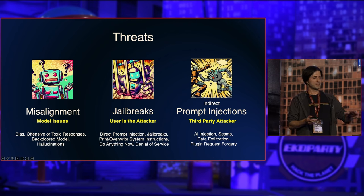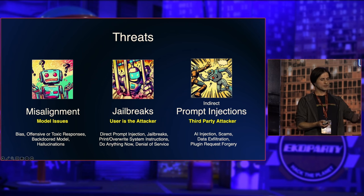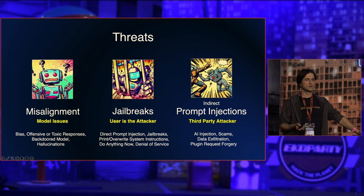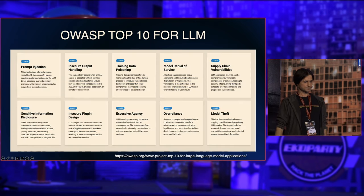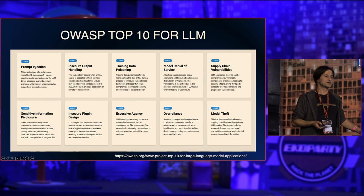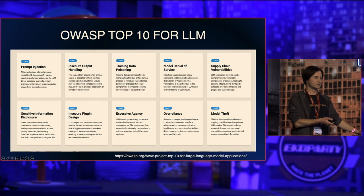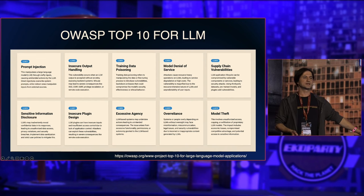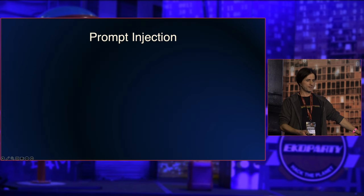Besides model issues, there are jailbreaks, where the user is the attacker — trying to make the model do something it's not intended to do. But what we'll really focus on in this talk is prompt injections, specifically indirect prompt injections, where a third-party attacker takes control of the conversation. They can perform scams, exfiltrate data, and call other tools and plugins during such an attack. The OWASP Top 10 for large language models highlights these as the top vulnerability — prompt injection is number one.